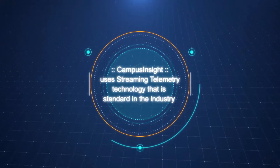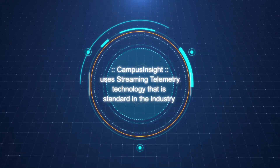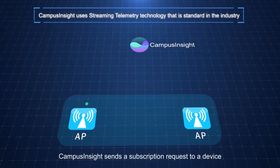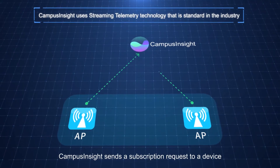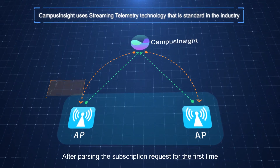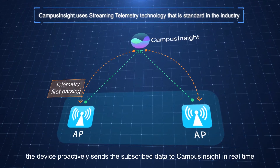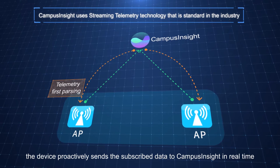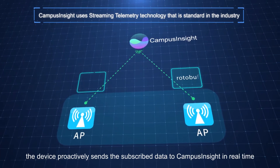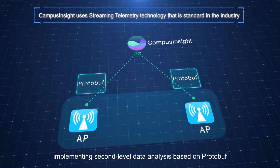Campus Insight uses streaming telemetry technology that is standard in the industry. Campus Insight sends a subscription request to a device. After parsing the subscription request for the first time, the device proactively sends the subscribed data to Campus Insight in real-time, implementing second-level data analysis based on protobuf.